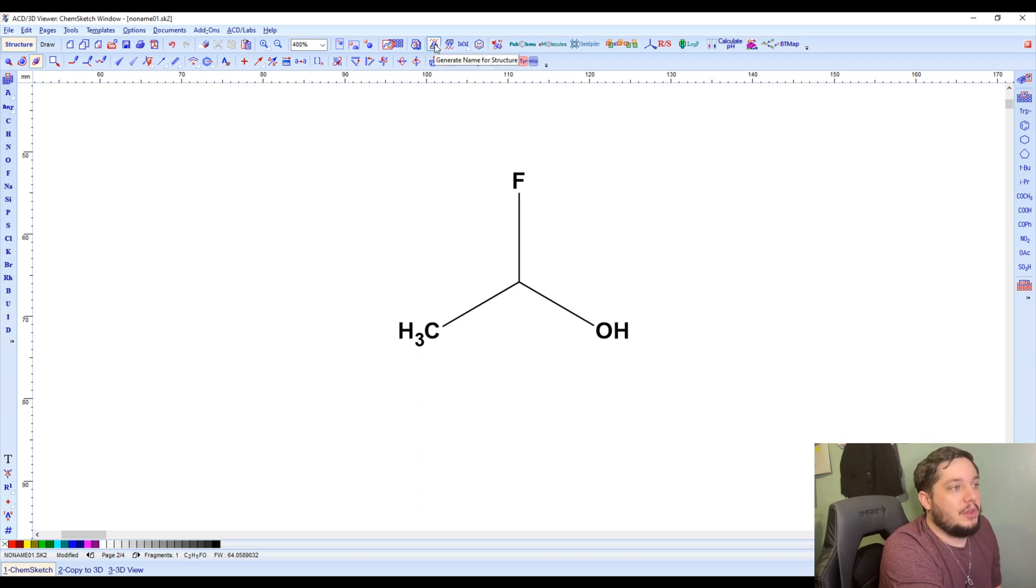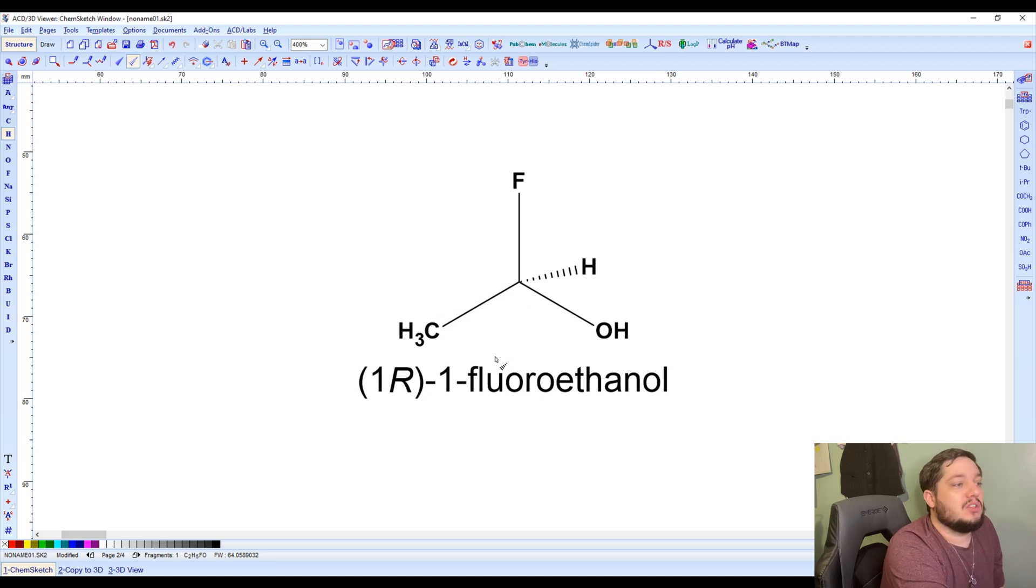So we can click here, generate name from structure. This one, of course, is not chiral at the moment. It's not seeing any chirality here. So that's why we don't get anything there. But if we go back, we can pull out the down stereochemistry there. Let's change that to a hydrogen so that it's actually chiral here. And we can then generate name from structure and we have that R that's given to us here. So that that is, we know that now this is an R configuration of the molecule.